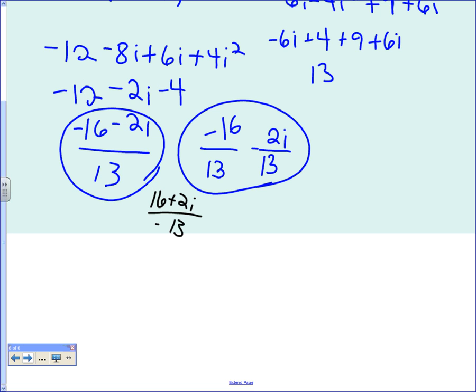And then 16 over 13, negative 16 over 13, and then minus 2 over 13. You should come out with the same thing. I feel like I feel it, but I can't see it. Any other questions on changing it into standard form? None? Okay.